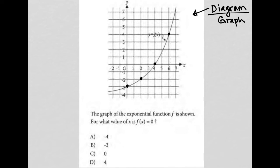The question says the graph of the exponential function f is shown. For what value of x is f of x equal to 0? Don't forget f of x can be replaced with y, so basically for what value of x does y equal 0 on this graph?